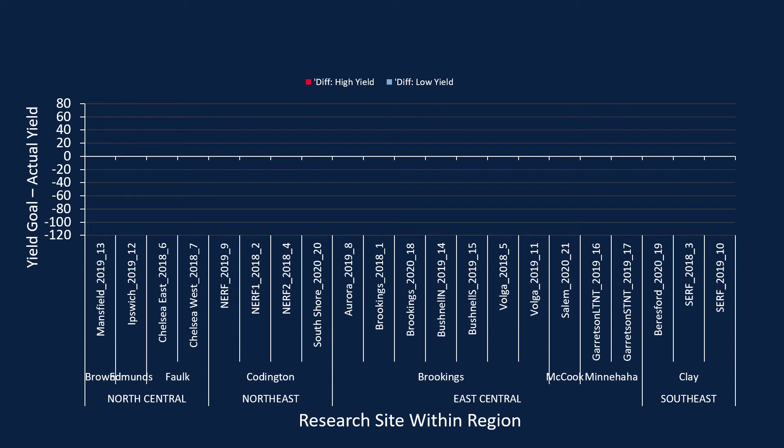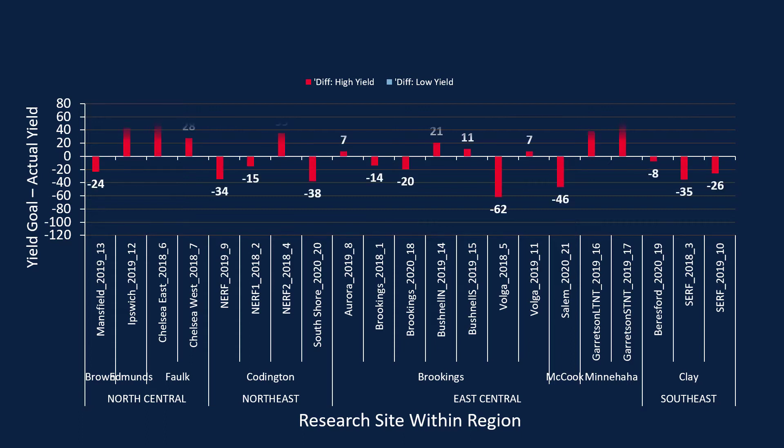Now if we want to look at just how accurate this approach is for determining yield, we're going to take values from 21 sites included in this data set. We'll take our yield goal — with the high yield goal shown in red and the low yield goal in blue — and subtract it from what we actually observed. The number closest to zero means we're more accurate. Above the line means we're overestimating yield potential; below it means we've underestimated.